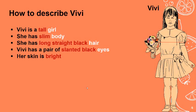How to describe Vivi. Vivi is a tall girl — gadis yang tinggi. She has a slim body — tubuh yang langsing. She has long straight black hair: long (ukuran/panjang), straight (bentuk/lurus), black (warna/hitam). Vivi has a pair of slanted black eyes — matanya sipit dan berwarna hitam. Her skin is bright — kulitnya cerah, terang, atau putih.